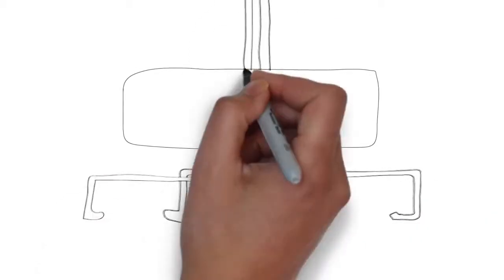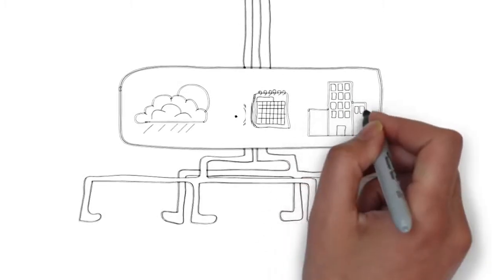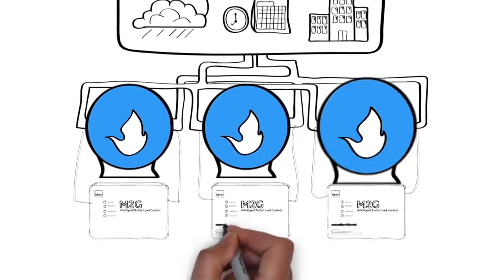Unlike other systems, M2G micro-manages the boilers, monitoring each individual boiler rather than the performance of all the boilers as a whole. That's how it identifies and prevents dry cycling.